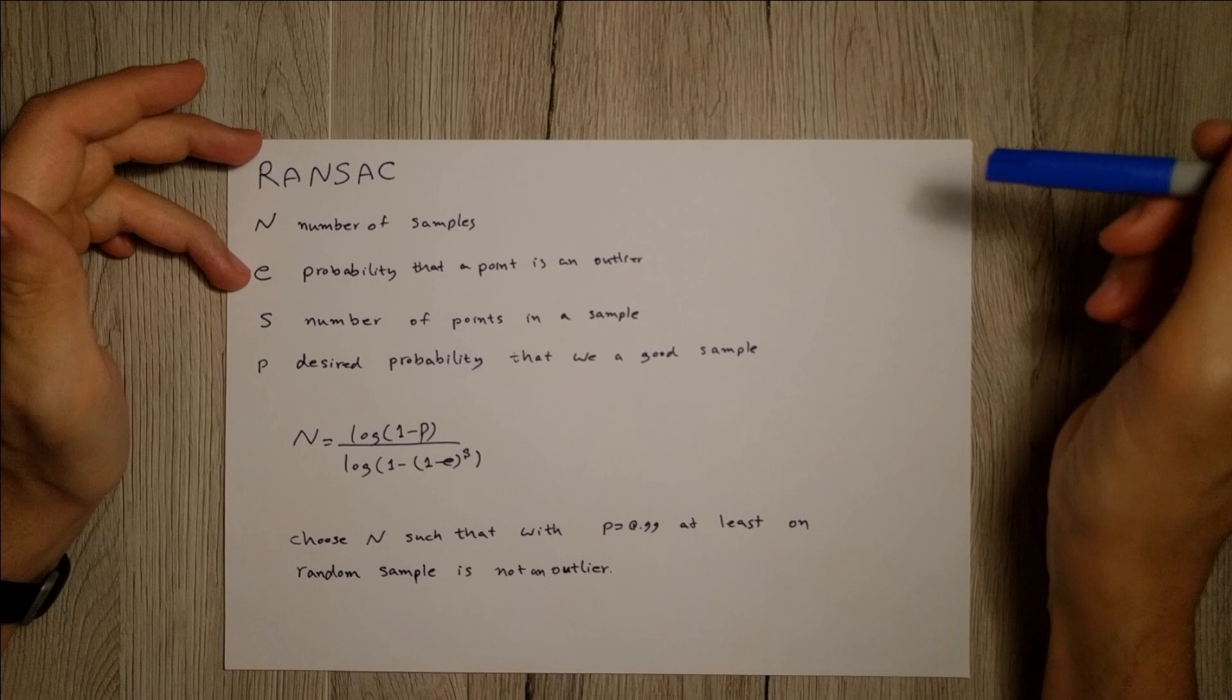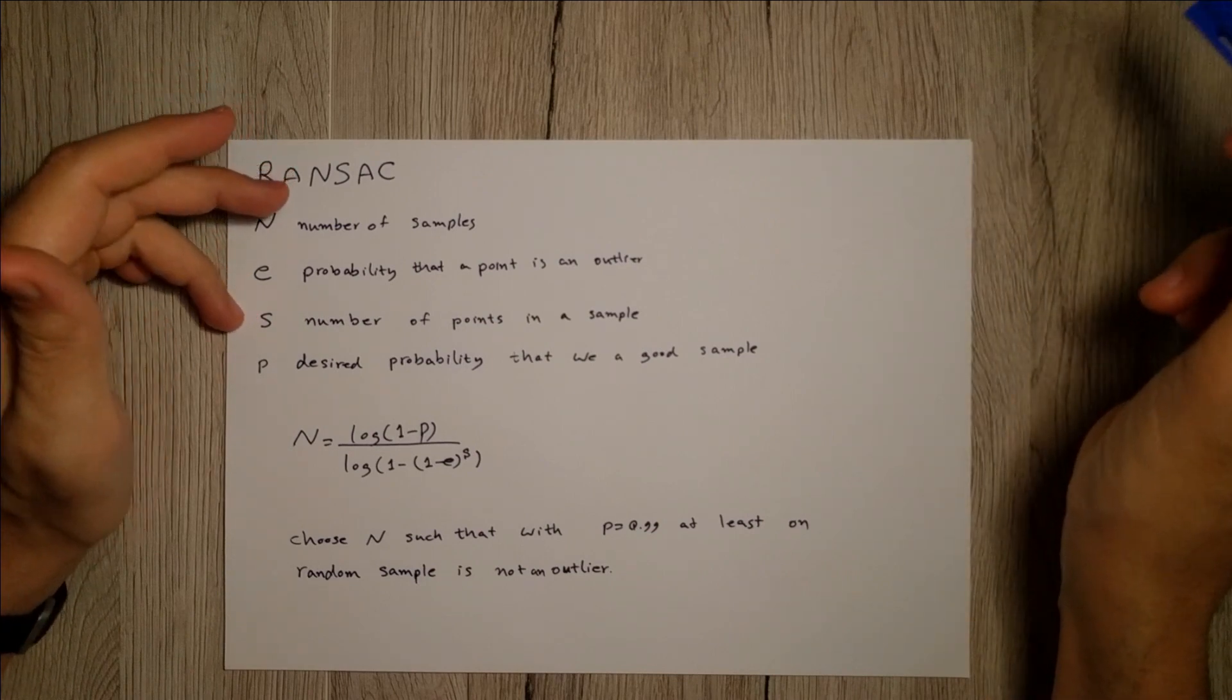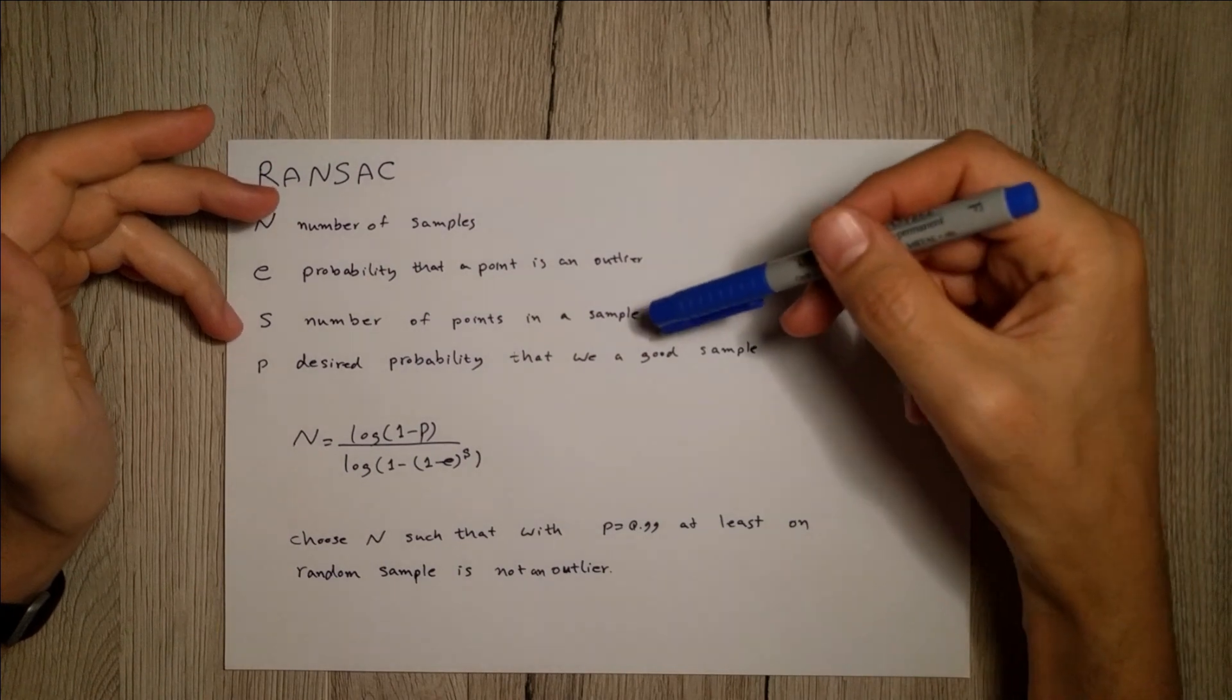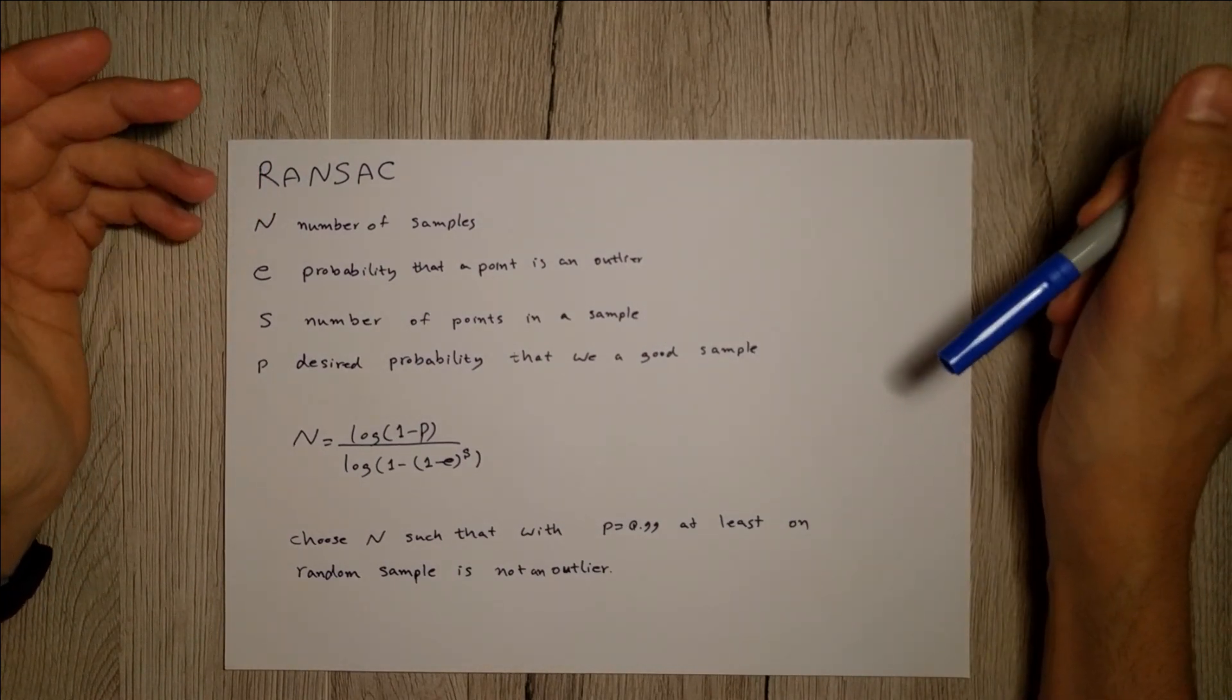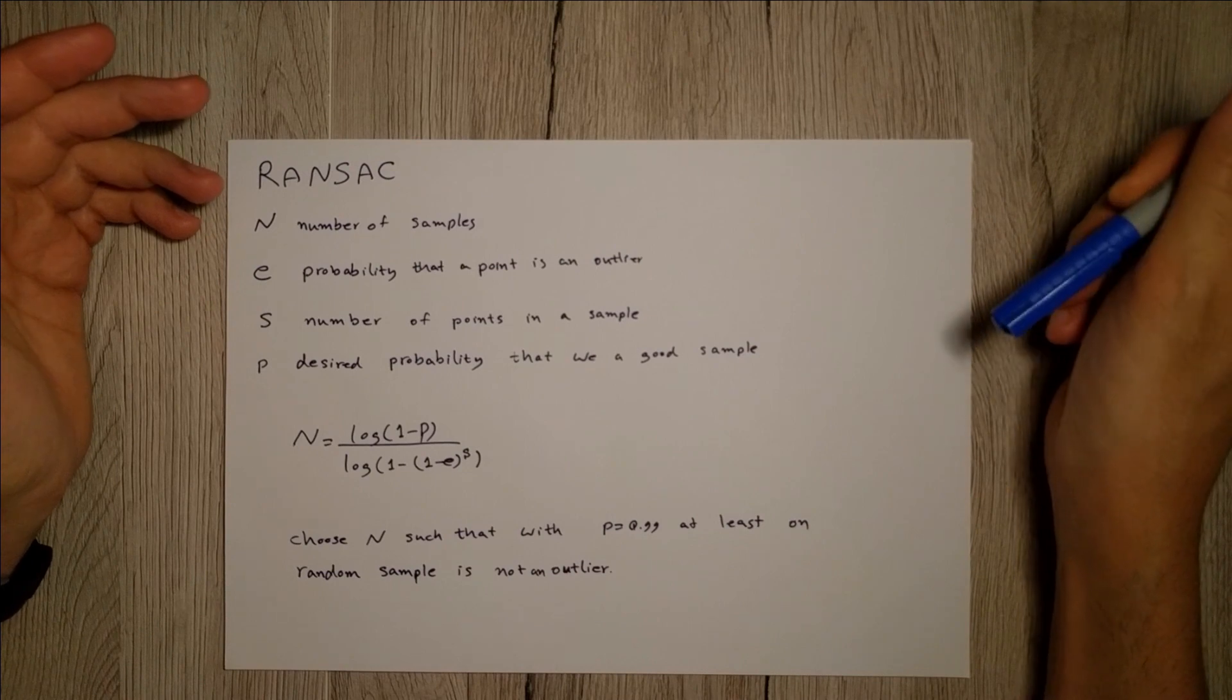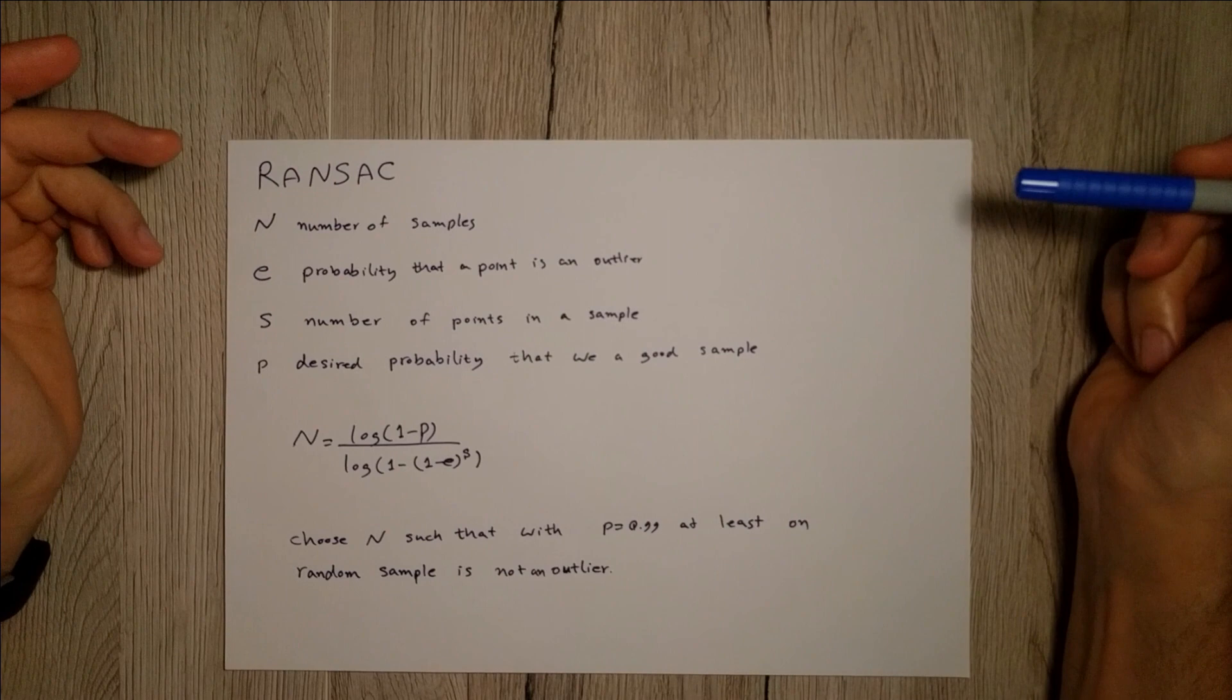S is the number of points in a sample. As I said, if you try to fit a line, S is two. If it's an affine transform, it's three. Homography is four. This is totally dependent on the problem that you're solving.